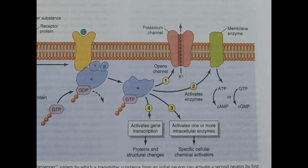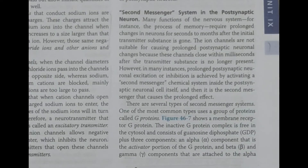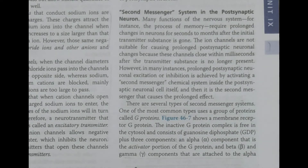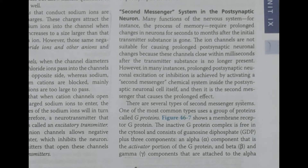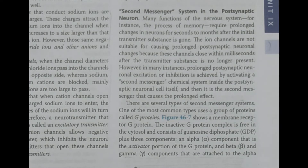The next important topic is the second messenger system in the postsynaptic neuron, and why this mechanism is very important — because of the process of memory saving. Memory — the storage of different types of information — requires prolonged changes in neurons. Information or stimulation must be present in our brain for a longer period of time, so neurons must undergo some continuous changes.